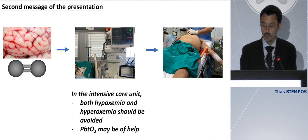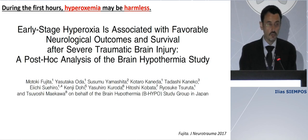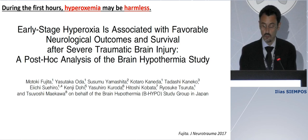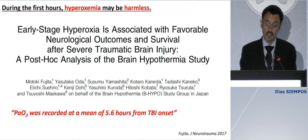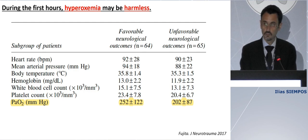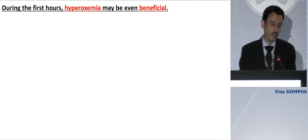Now we go to the emergency department. During the first hours, hyperoxemia may be harmless — this is different from what we said about the ICU. That was the conclusion of a study conducted in Japan, where investigators recorded PaO2 at a mean of six hours from TBI onset and found no difference in PaO2 levels between patients who had a good outcome and those who had a bad outcome.